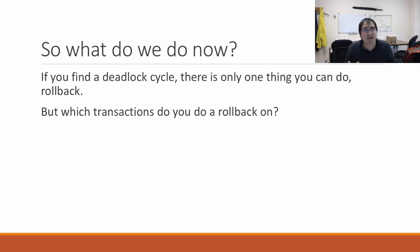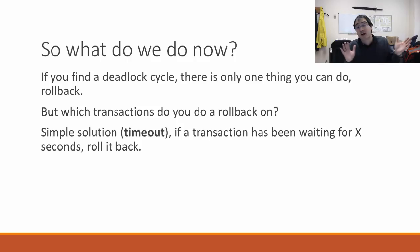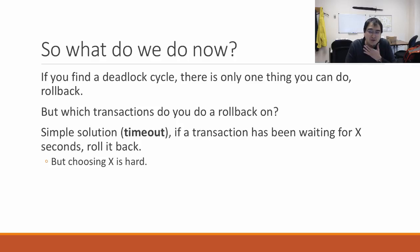A simpler solution is having a timeout: if a transaction has been waiting for X number of seconds, roll it back. Because if you're in a deadlock cycle, you're definitely going to be waiting forever, so you'll wait at least X seconds. This is actually often the default way these things are handled in many systems, including SQLite. However, one hard part is that choosing X is hard — how long are you willing to wait before you decide a transaction is probably deadlocked?